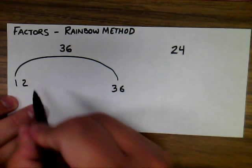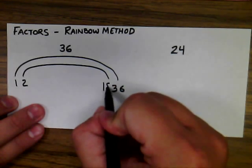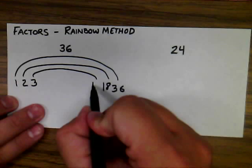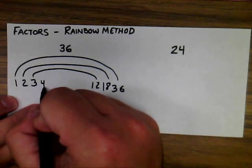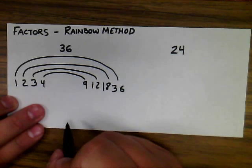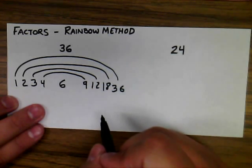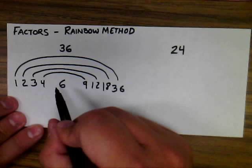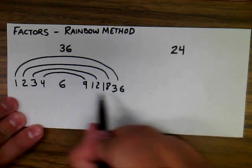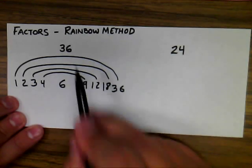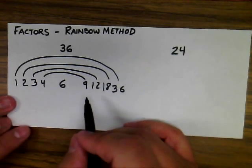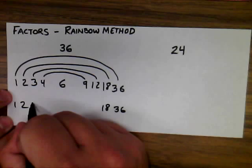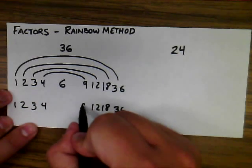I also know because it's even that 2 times 18 equals 36. I can do 3 times 12 equals 36, 4 times 9 equals 36, and 6 times 6 equals 36. Note I only included the factor 6 one time because that's one factor. So there are a total of 9 factors for the number 36. You could do the same work without actually making the rainbow by just listing the numbers: 1 and 36, 2 and 18, 3 and 12, 4 and 9, and 6.